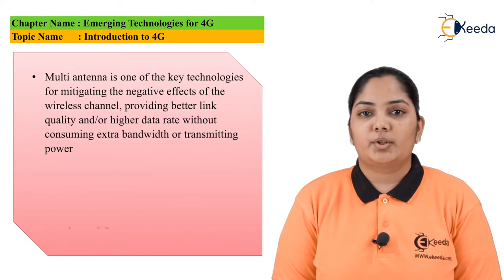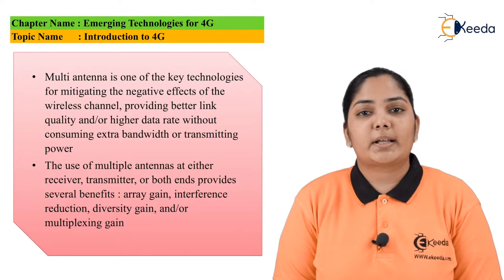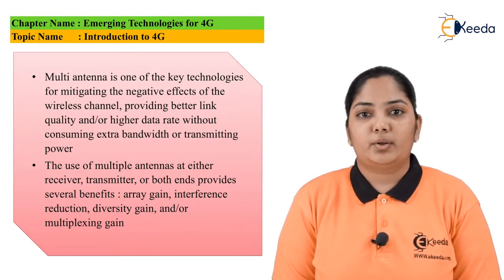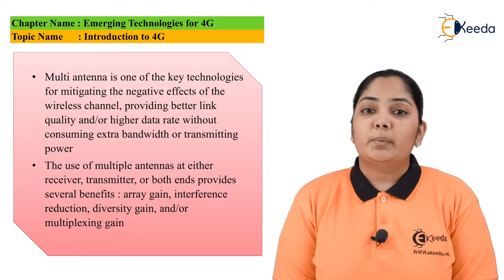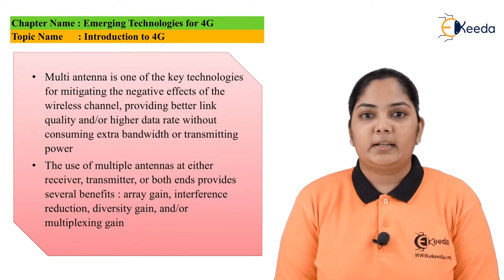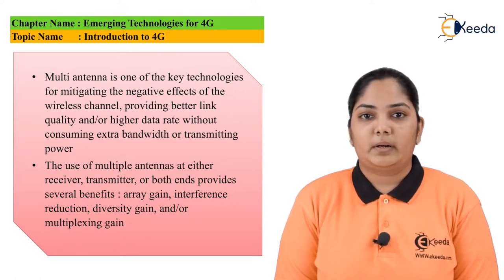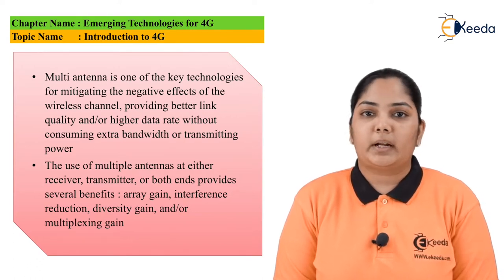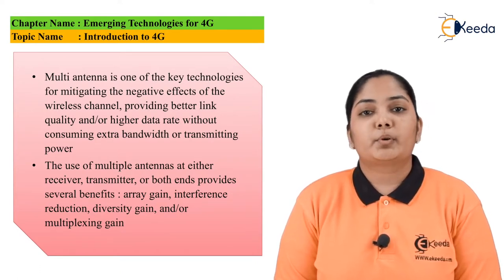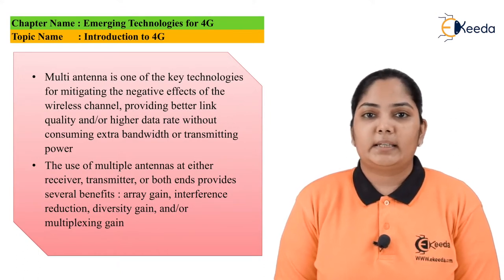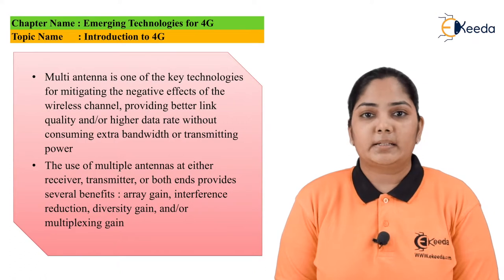MIMO stands for Multiple Input, Multiple Output. At the transmitter and the receiver we have multiple antennas which transmit the information. MIMO is considered an important technology for mitigating the negative effects of transmission that were happening with single antenna use. MIMO provides extremely high data rates, better link quality, and it does not consume extremely high transmitter power. The use of MIMO at the receiver and transmitter provides benefits like diversity gain, multiplexing gain, antenna gain, and it also reduces interference from multiple users simultaneously transmitting in the nearby region.